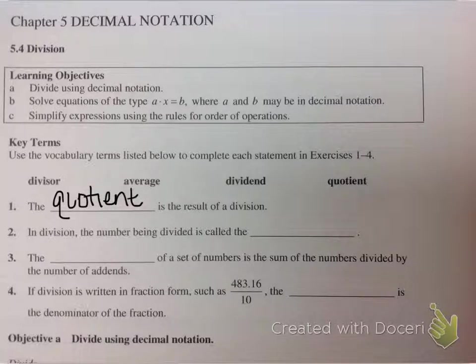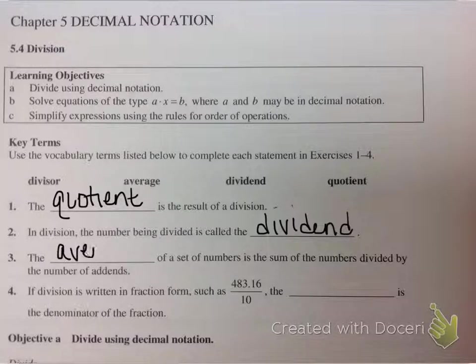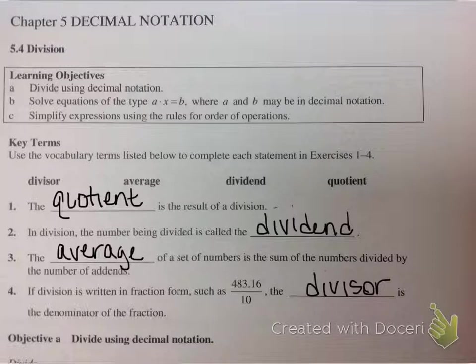In division, the number being divided is the dividend. The average of a set of numbers is the sum of the numbers divided by the number of addends, and if division is written in fraction form, the divisor is the denominator of the fraction.